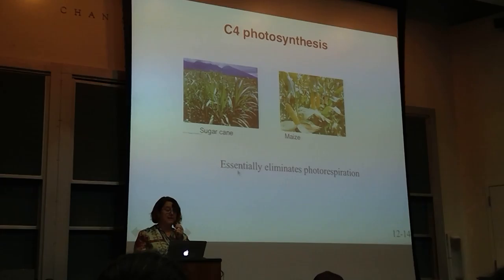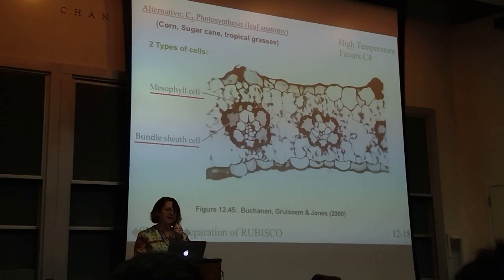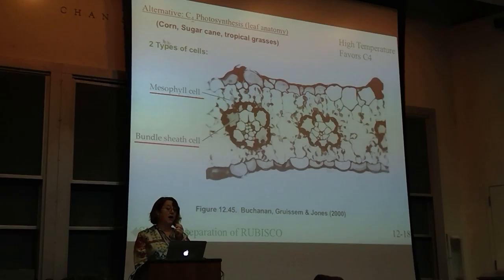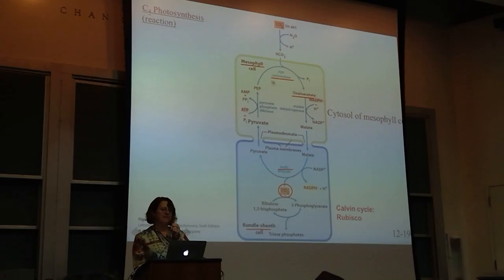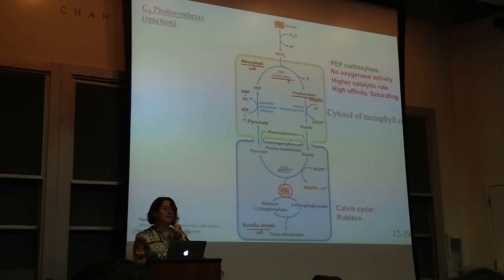When we talk about C4 photosynthesis, it's essentially limiting photorespiration. The types of plants include corn, sugarcane, and tropical grasses—these evolved in humid, high-temperature locations. In these plants, RuBisCO is not in the mesophyll cell; it's in a secondary cell called the bundle sheath. The enzyme PEP carboxylase uses the CO2—it does not have oxygenase activity, cannot use oxygen, only CO2.